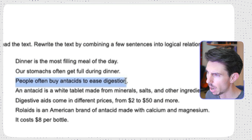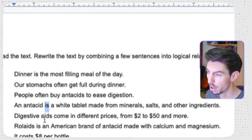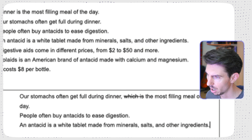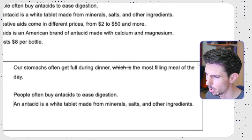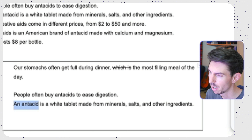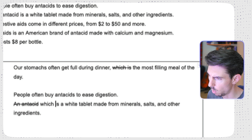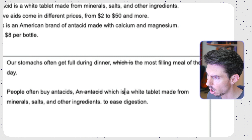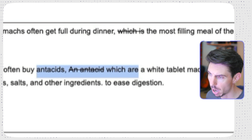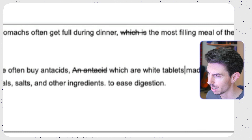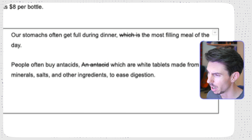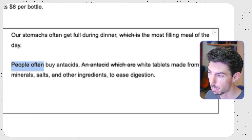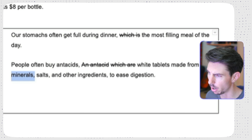Next part. 'People often buy antacids to ease digestion.' And then we have, again, a definition: 'An antacid is a white tablet made from minerals, salts, and other ingredients.' We're going to turn this definition into a non-restrictive relative clause with the pronoun 'which are,' inserted right next to the thing it's modifying — antacids. So it becomes: 'People often buy antacids, which are white tablets made from minerals, salts, and other ingredients, to ease digestion.' But because that non-restrictive relative clause uses the verb 'to be,' we reduce it into an appositive: 'People often buy antacids, white tablets made from minerals, salts, and other ingredients, to ease digestion.'